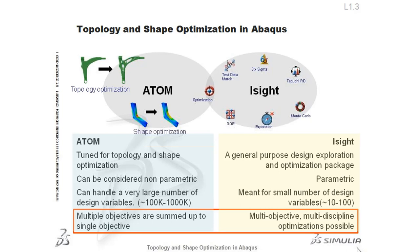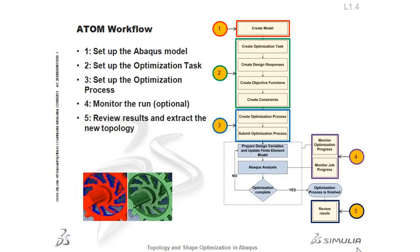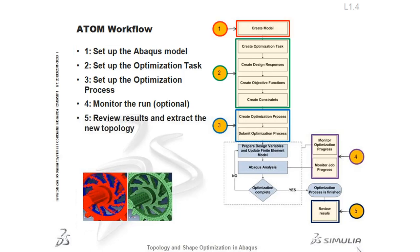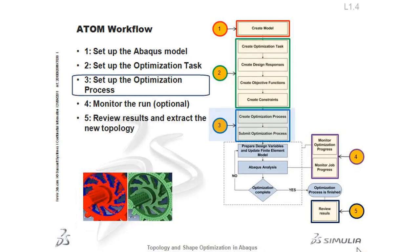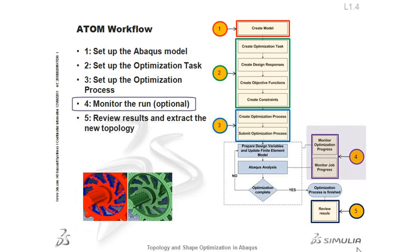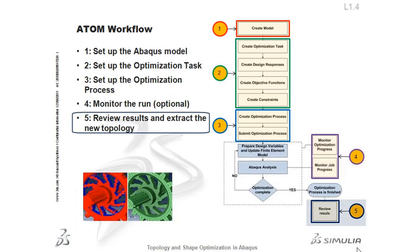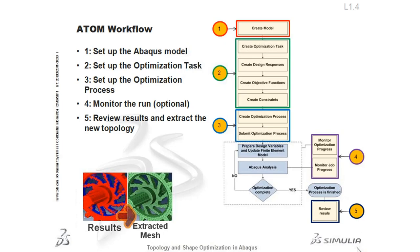The workflow of the Abaqus Topology Optimization Module can generally be divided into five steps. Step one is the setup of the Abaqus model. Step two is setup of the optimization task, involving configuration of the optimization algorithm, creation of design responses, objective functions, and constraints. In step three, an optimization process is created and submitted in step four. It is monitored, and in step five the results are reviewed. Results can be extracted either as an Abaqus input file or an STL file.